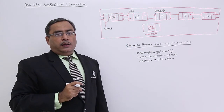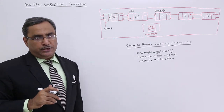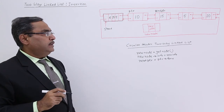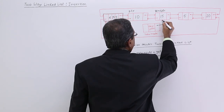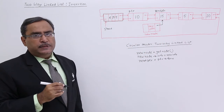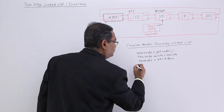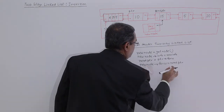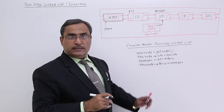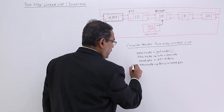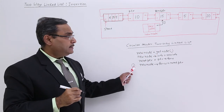Now we are supposed to connect this particular new node in between PTR and next PTR. At first, we are trying to establish the forward link from the new node. The code is: new node forward is equal to next PTR. So this link has been established — this is statement number 1.